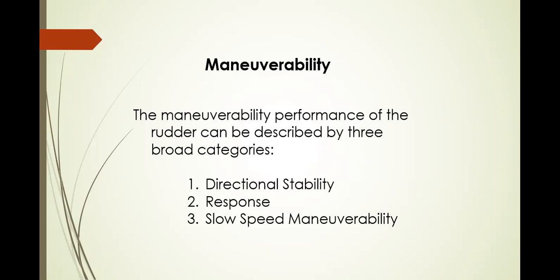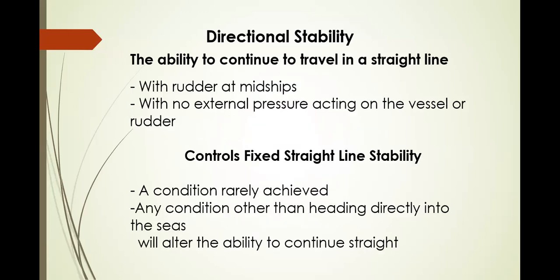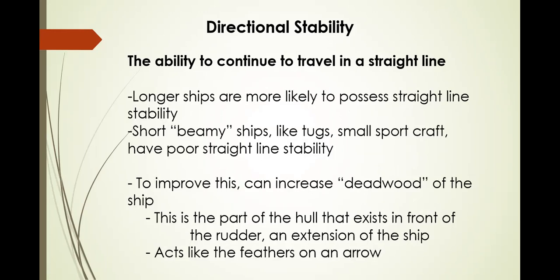Maneuverability performance of the rudder can be described by three categories: directional stability, response, and slow speed maneuverability. Directional stability is the ability to continue traveling in a straight line with rudder amidships and no external forces acting on the vessel — this controls fixed straight-line stability, a condition rarely achieved. Longer ships are more likely to possess straight-line stability; short ships like tugs and small sport craft have poor straight-line stability. To improve this, the ship has what is called deadwood — the part of the hull that exists in front of the rudder, acting like the feathers on an arrow.